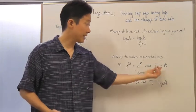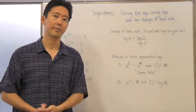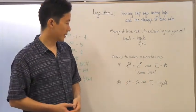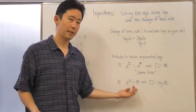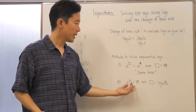And say that the exponents of course are equal and then solve from there. Now if you do not have the same base and you cannot get the same base on both sides of the equation,